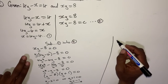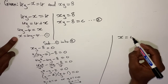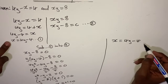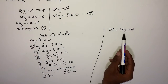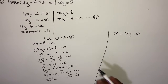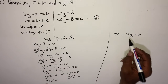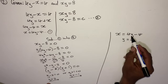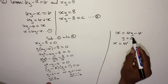Collecting like terms: y squared remains. Then 2y plus 2y gives 4y; minus y minus y gives minus 2y. For the constants: 4 minus 2 minus 10 gives negative 8. So combining the y terms: 4y minus 2y gives 2y. And negative 12 plus 4 gives negative 8. Therefore: y squared plus 2y minus 8 equals 0.